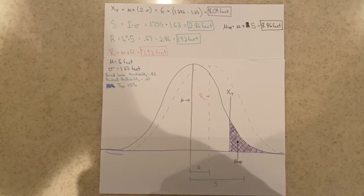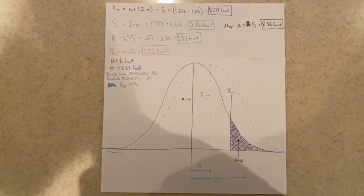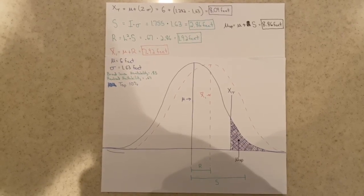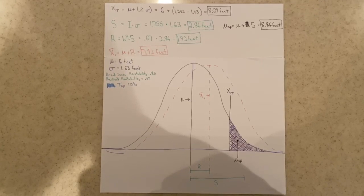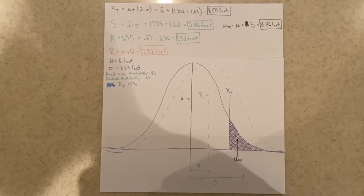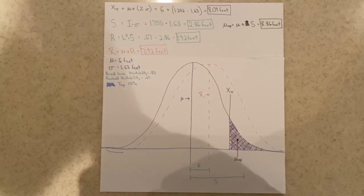We can then find the mean population of the next generation by taking our mean from the previous generation, which was 6 feet, and combining it with 1.92 feet to get a new mean of 7.92 feet.